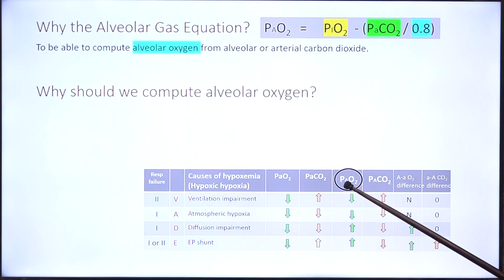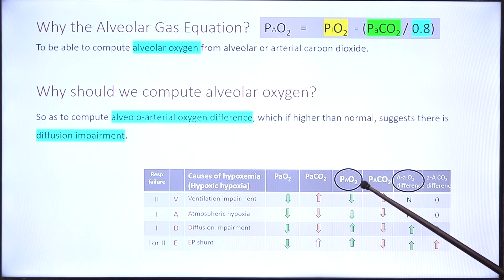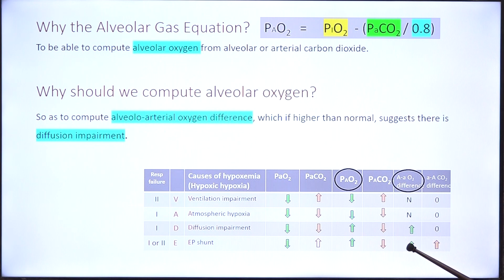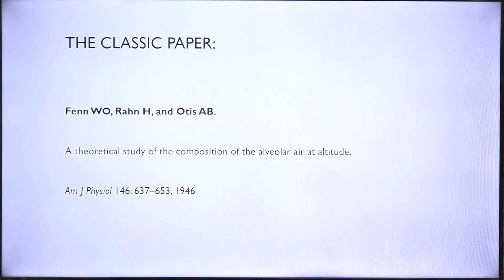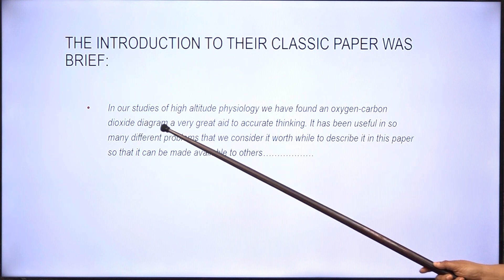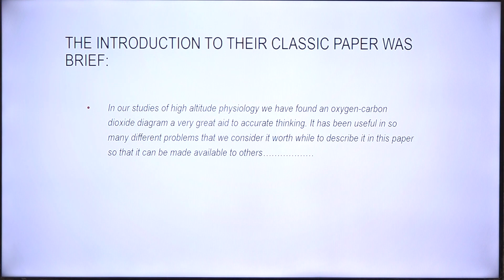Why should we compute alveolar oxygen? If we know arterial oxygen, we can calculate the alveolar-arterial oxygen difference, which is a lung function test. If it is increased beyond normal values, we know there is a diffusion impairment. This classic paper from Professor Fenn not only describes the alveolar gas equation but also notes that they found the oxygen-carbon dioxide diagram a very great aid to accurate thinking — which is what we shall discuss in the next lecture.